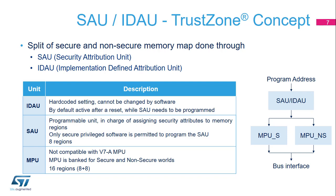For example, if SAU maps a region as non-secure and IDAU maps it as secure, the region is tagged as secure. SAU supports eight regions defined by start and end addresses. The alignment requirement for start and end addresses is 32 bytes.